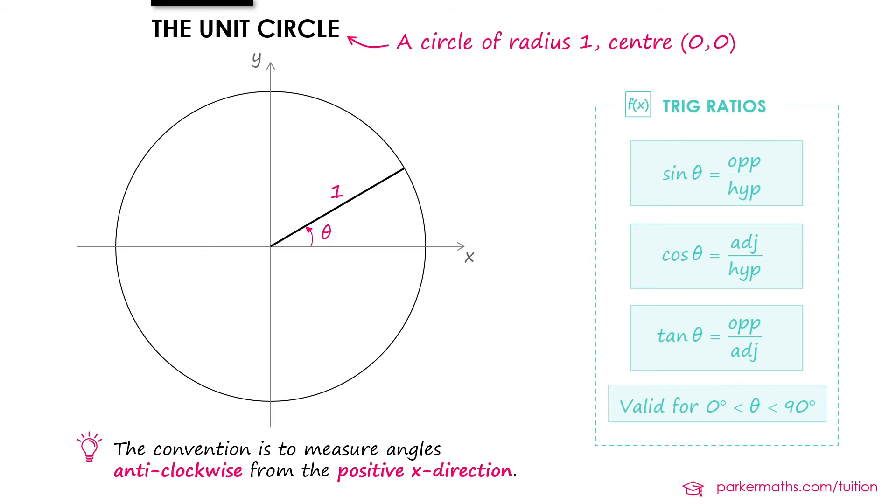We can take this radius and turn it into a right-angled triangle. And as we saw moments ago, the base of this triangle, the distance moved in the X direction, is cos θ. And the height of this triangle, the distance moved in the Y direction, is sin θ.